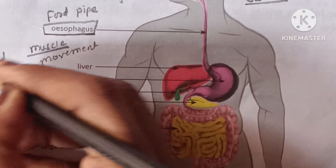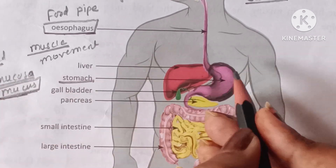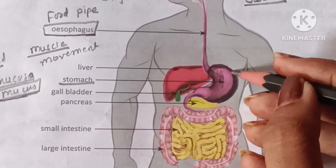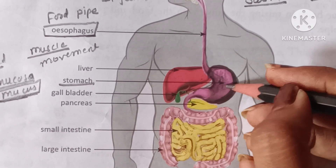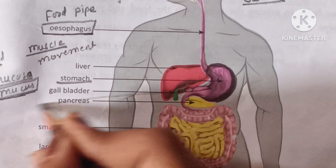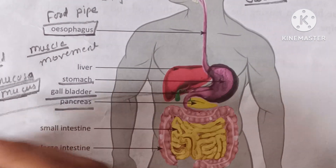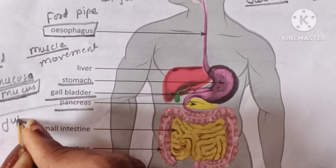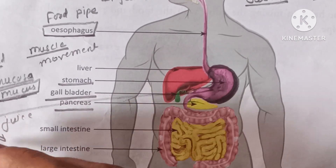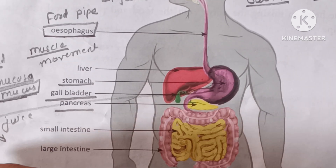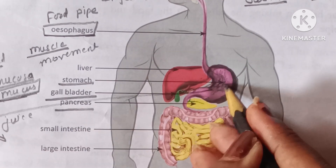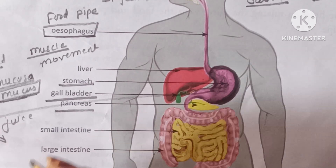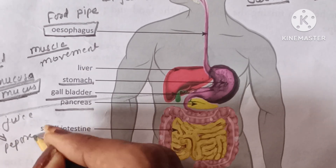The mucus also churns the food, meaning it mixes and breaks the food into fine pieces inside the stomach. On the inner side of the stomach, there is gastric juice. This gastric juice contains hydrochloric acid, which acidifies the food and kills the microorganisms present in the food.